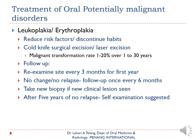Treatment of oral potentially malignant disorders such as leukoplakia or erythroplakia involves reducing risk factors and discontinuing habits, followed by surgical or laser excision. Keep in mind that malignant transformation rates range from 1 to 20% over 1 to 30 years — much higher for erythroplakia. Follow-up is critical: re-examine the site every three months for the first year, then every six months if no changes. Take a new biopsy if a new clinical lesion appears. After five years without relapse, the patient can proceed to self-examination, though continued follow-up is recommended.